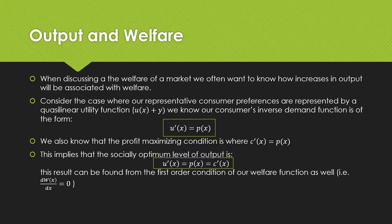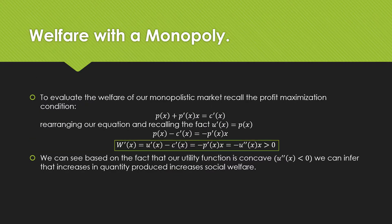We know that our consumer's inverse demand function will follow this form, that is our marginal utility from consumption of good X is equal to the price. We know that the profit maximizing condition is where marginal cost is equal to the price also. This implies that the socially optimal level of output is from this equality where our marginal utility is equal to our marginal cost, and we can set either of those equal to price. This result can be found from the first order condition of our welfare function as well, which is taking the derivative of our welfare function with respect to X.